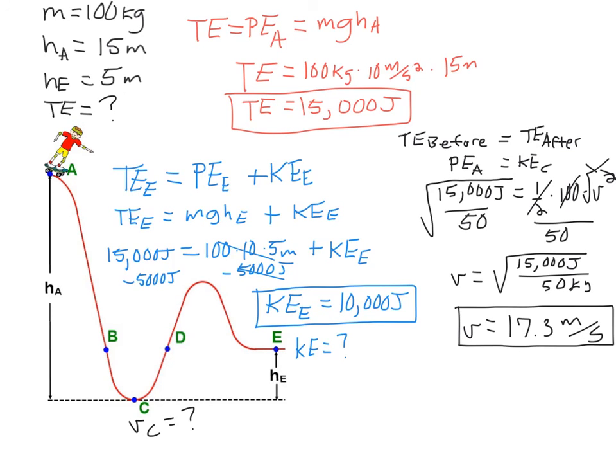So once again, remembering that the total energy at E is going to be the total energy that it was at A and C, or 15,000 joules, we plug that in, as well as the mass of 100 kg, the gravity of 10 m per second squared, the height at E of 5 m, and that ends up being 5,000 joules plus the kinetic energy on the right side being equal to 15,000 joules. You subtract 5,000, and you get 10,000 joules of kinetic energy at point E. Now, that should make sense because then there was 5,000 of gravitational potential energy, and the total energy still ended up being equal to 15,000 joules.